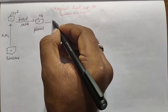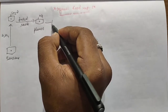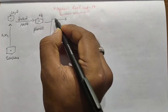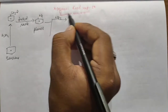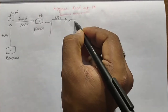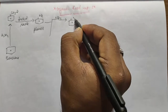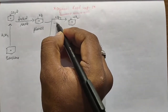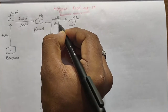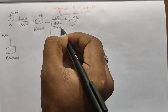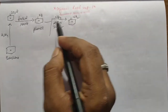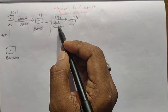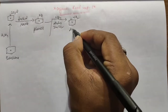Phenol reacts with various compounds to form respective compounds. For example, when Phenol reacts with Ammonia in presence of Anhydrous Zinc Chloride, it can form Aniline by the loss of a water molecule.